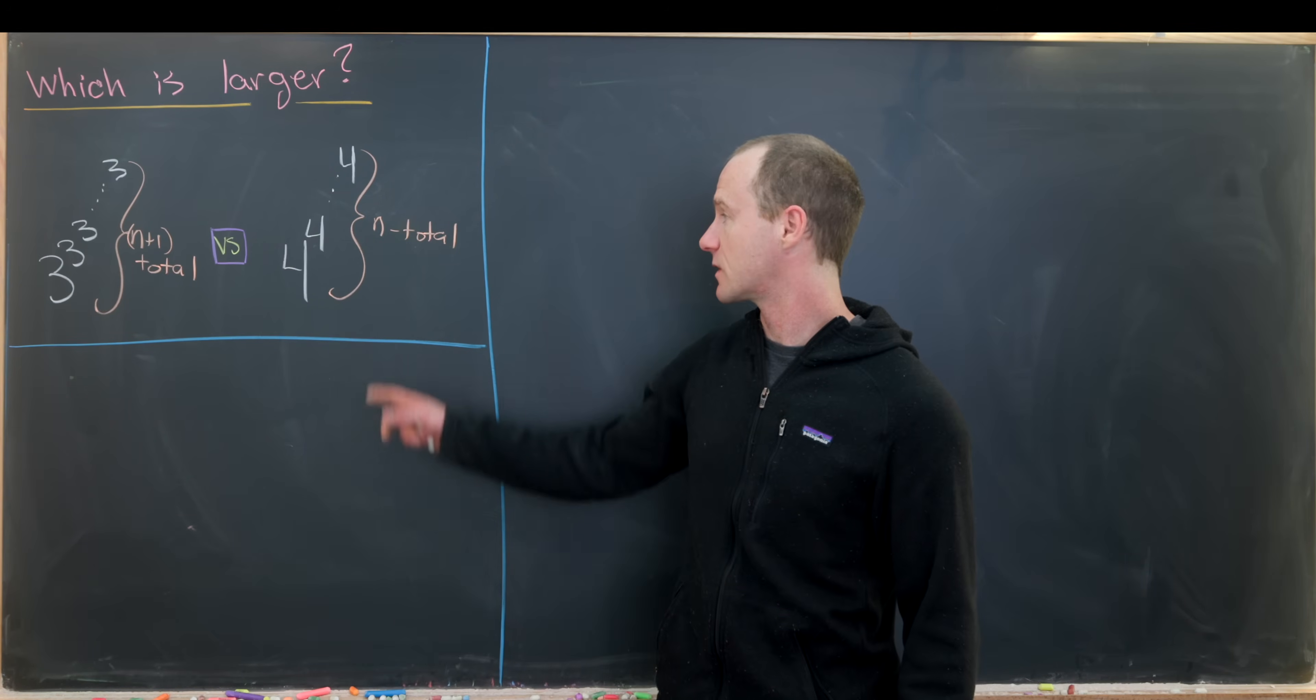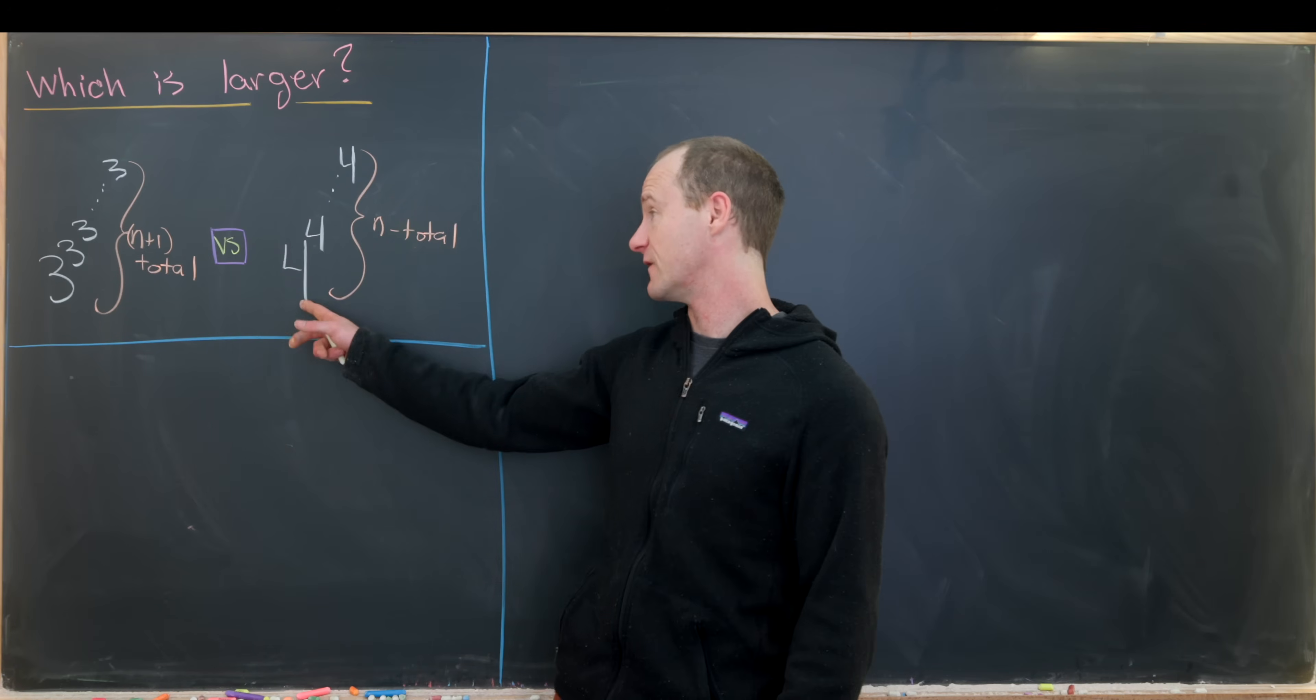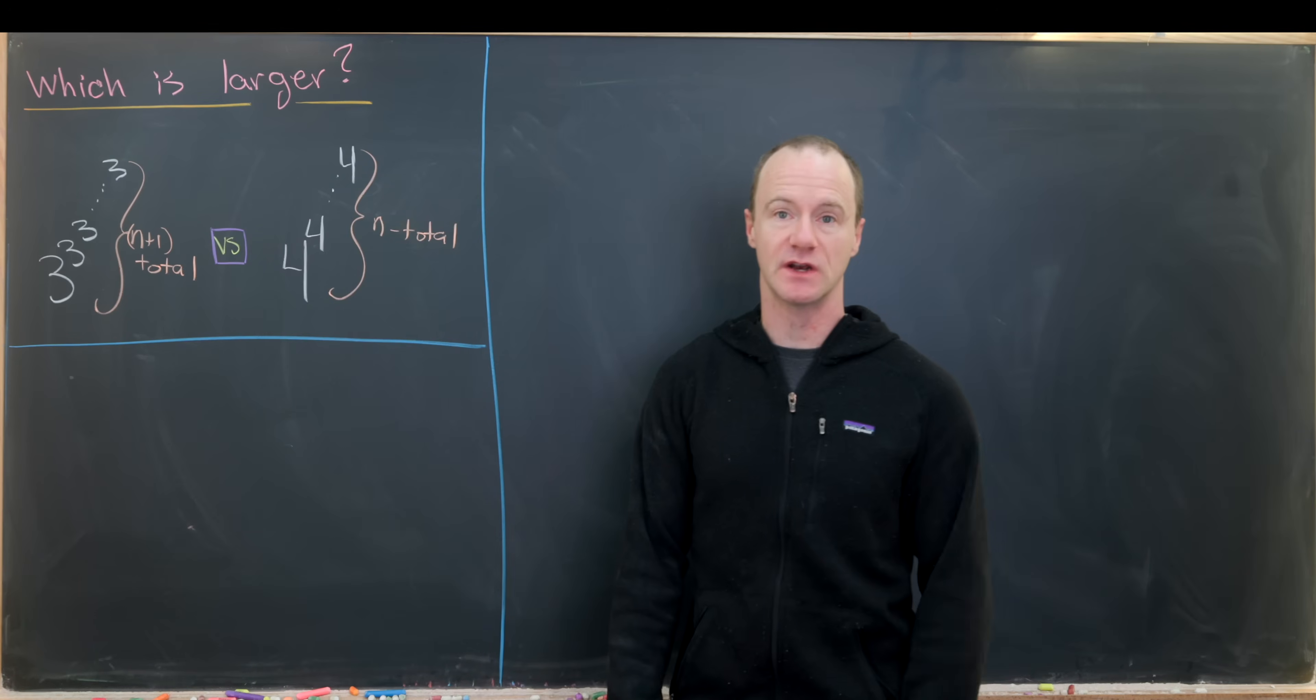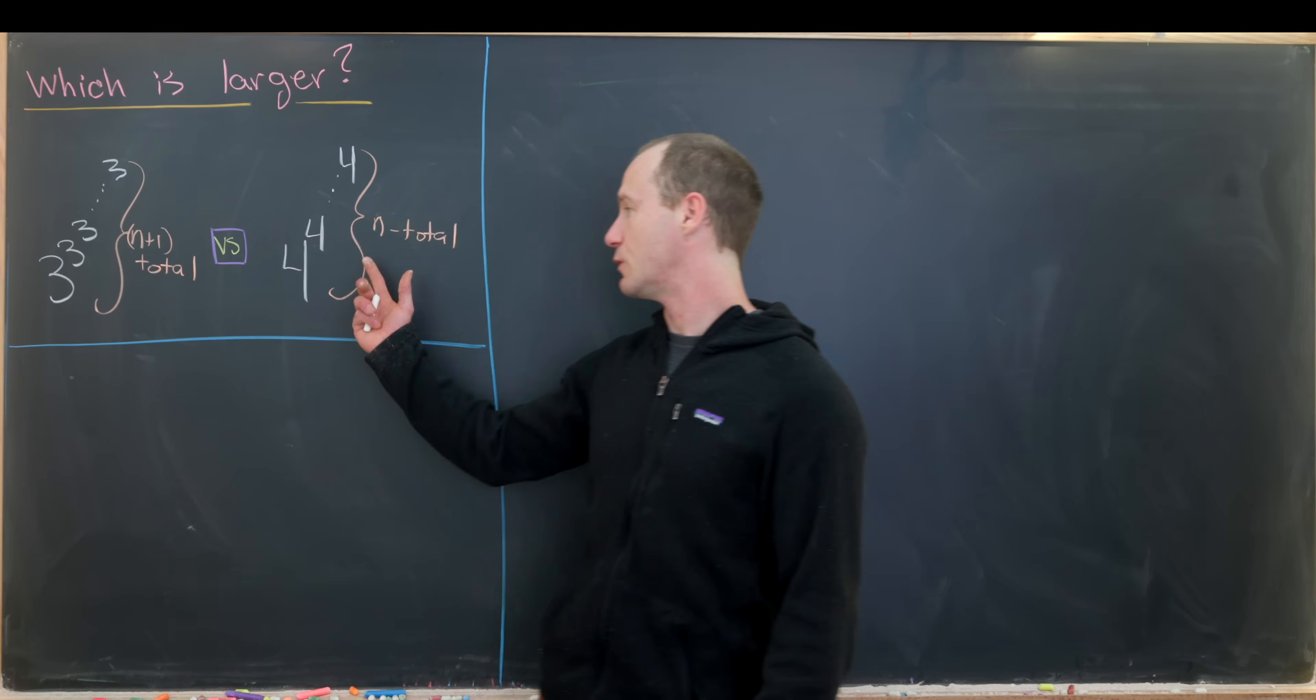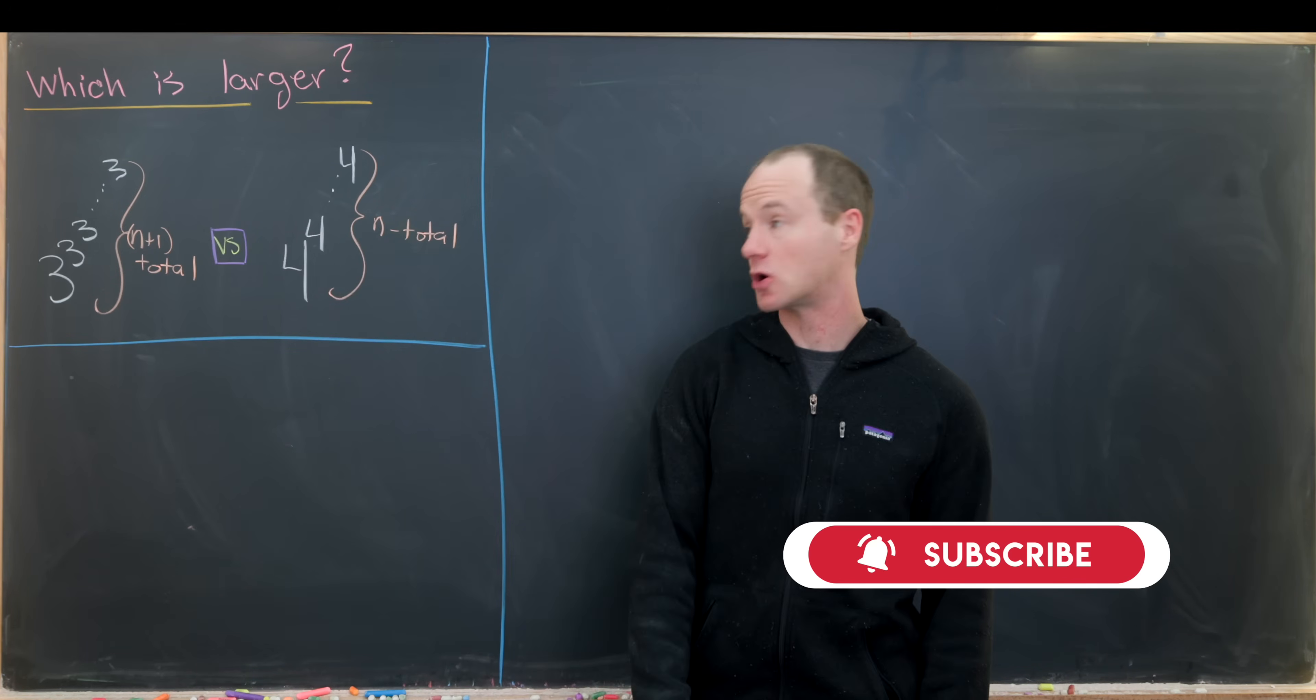And the other number contains n total 4s. So we have 4 to the 4 to the 4 and so forth, n total times. Like I said, we want to determine which one of these numbers is larger.